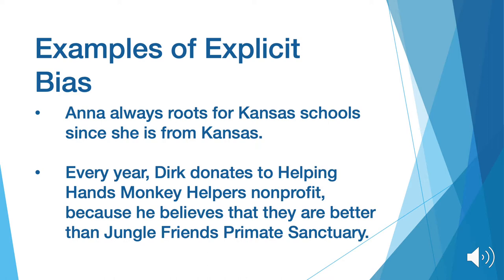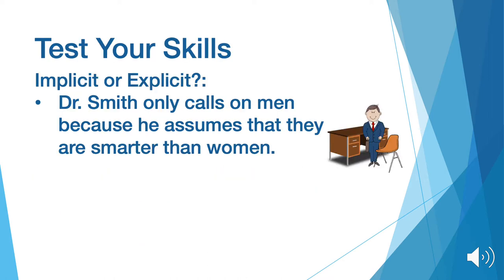Now that we've gone through the two different types of bias, let's test your new knowledge. Is the following sentence implicit or explicit? Dr. Smith only calls on men because he assumes that they are smarter than women. This example is implicit. We know that this is implicit because Dr. Smith has a preconceived notion that men are smarter than women.